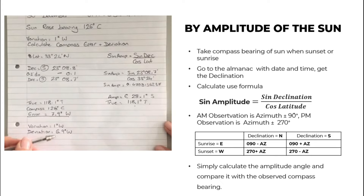For astronomical calculation, the fastest way to get compass error is by the amplitude of the sun. Take the compass bearing of the sun at sunset or sunrise, then go to the almanac with the date and time, get the declination, and calculate using the formula: sine amplitude equals sine declination divided by cosine latitude. Calculate the amplitude angle and compare it with the observed compass bearing to get the compass error.